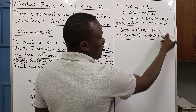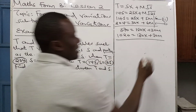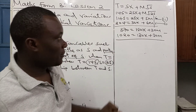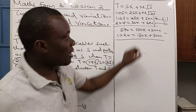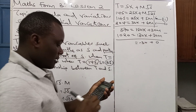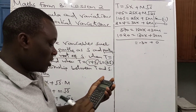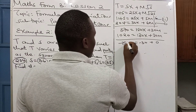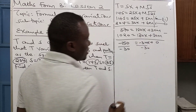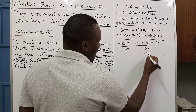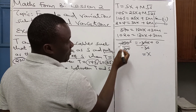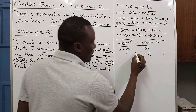Now that the coefficients of M are equal, we can eliminate M by subtracting. Remember, we only subtract if the signs are the same; if they are different, you add. Since they are the same, we subtract. This gives 0 for the M terms. 870 minus 1020 gives minus 150. The X coefficient gives minus 30. Dividing minus 150 by minus 30, the negatives cancel, so X equals 5.